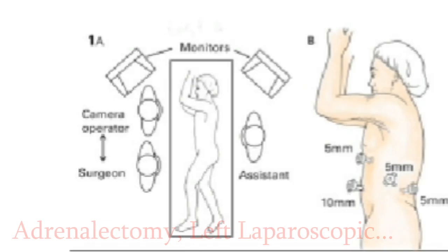Left adrenalectomy positioning: the patient is placed in a lateral position with the left arm crossing the chest and supported on a padded armboard. The right arm is placed on a separate armboard and an axillary roll is used. Liberal padding is used between and around both arms. The abdomen and flank area should be exposed, and the left knee flexed with padding of blankets or pillows between the legs.